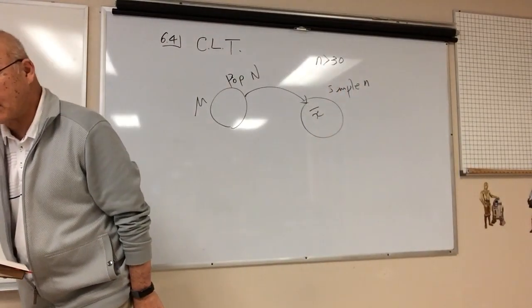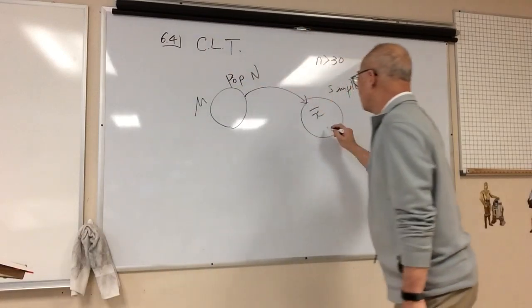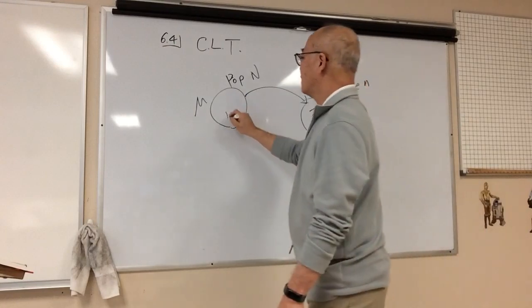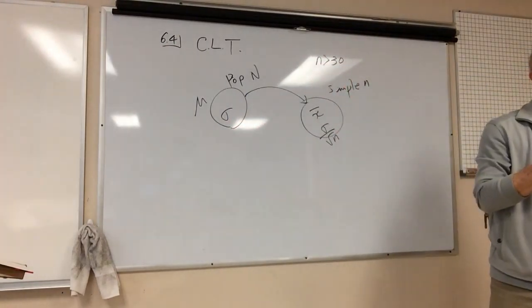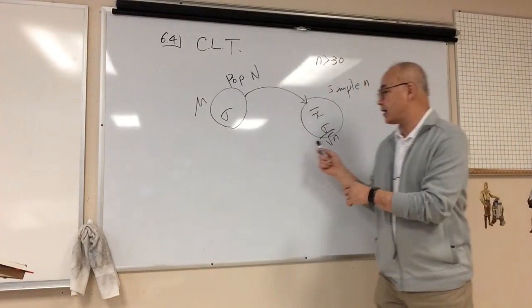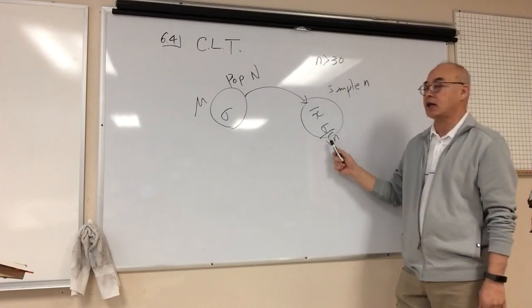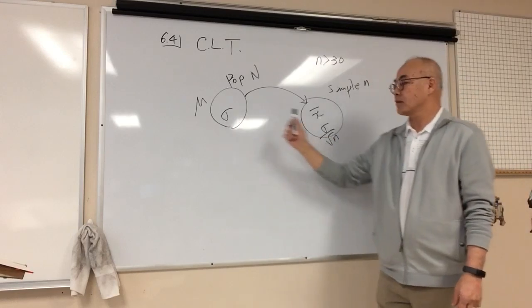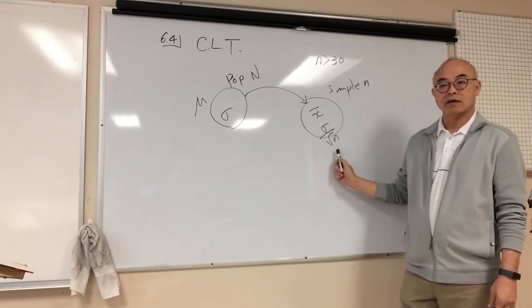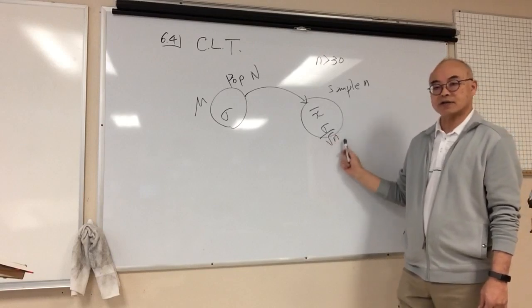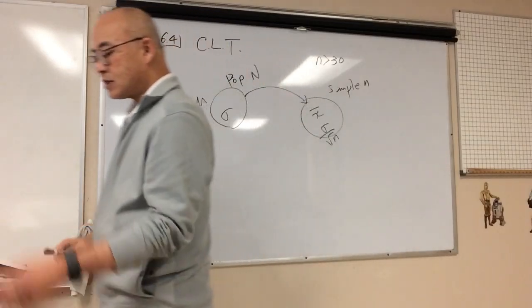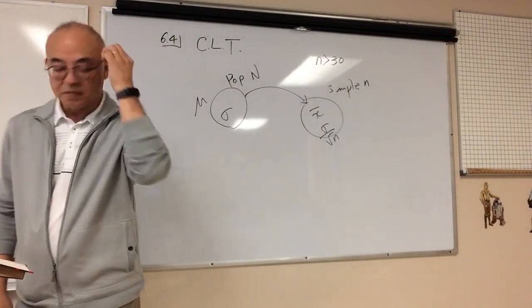Now, what it also goes on to tell you is that the standard deviation of the sample is going to be like this. Remember we talked about the standard deviation was a biased estimator, bias being this is the bias that you're going to add. You're going to divide your original standard deviation by the square root of your sample size. So this is a biased estimator.